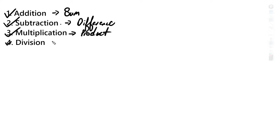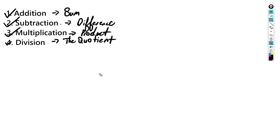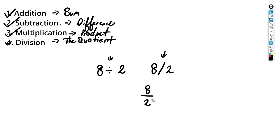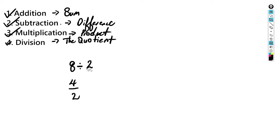We're doing division now, and for division we find the quotient. Let me show you the division symbol. Eight divided by two — this is the division symbol. Some people also use a slash: eight divided by two. Most people use these two forms. You'll rarely see other notations; you might see those in computer science or IT, but not as commonly. Let's clear this and focus on these two symbols.